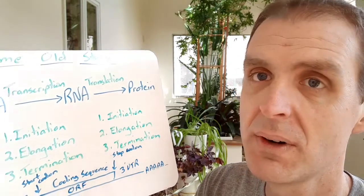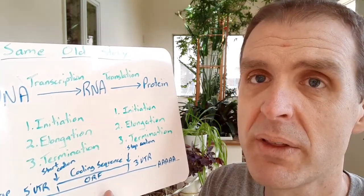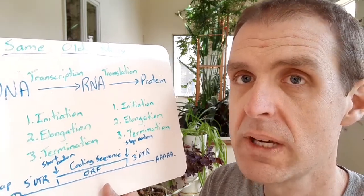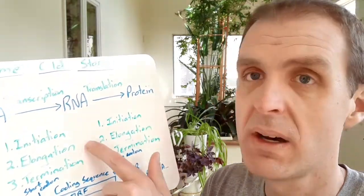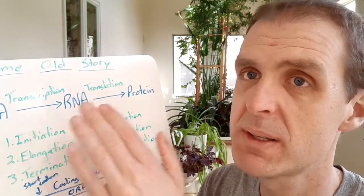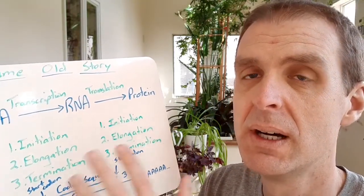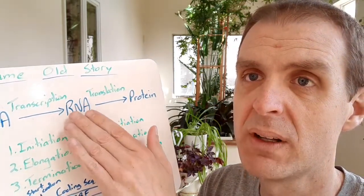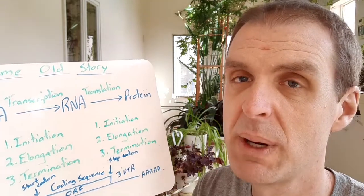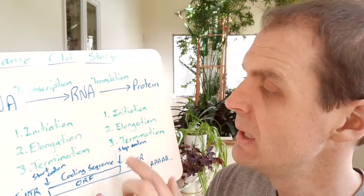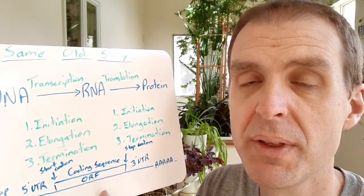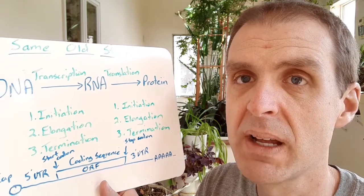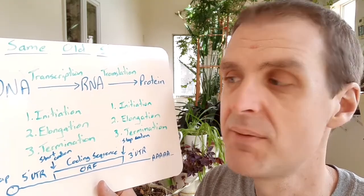So initiation on both of these is when you have to build up all the proteins on the DNA or the mRNA to get the process started. Elongation is the polymerase moving in a five prime to three prime direction building the mRNA, or it's the ribosome moving along the mRNA in a five prime to three prime direction to build the protein. Finally termination. Both of these processes require a lot of proteins binding onto the nucleic acid and then finally letting go.